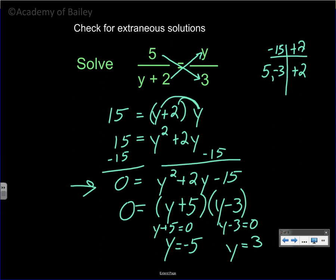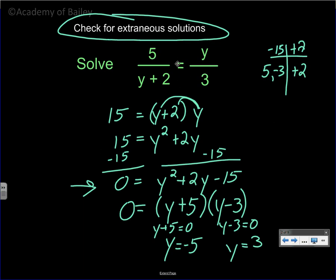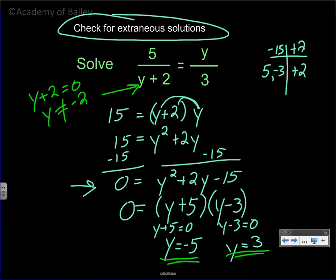We're not finished though. Check for extraneous solutions. Extraneous solutions would be: what value can I plug in for y to make that equal to 0? Because you cannot have 0 on the bottom of the fraction. So y + 2 = 0 means y would equal negative 2 — but we cannot have y equal negative 2. Looking at our answers: negative 5 is not negative 2, and 3 is not negative 2. If either one had been negative 2, we would have said it couldn't be a solution. So we have our two solutions: negative 5 and positive 3.